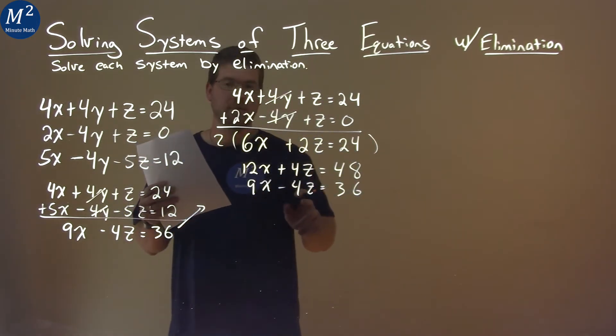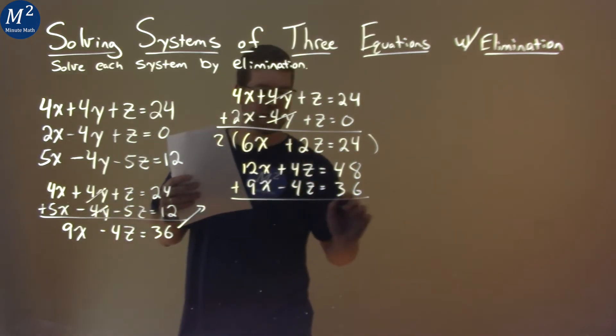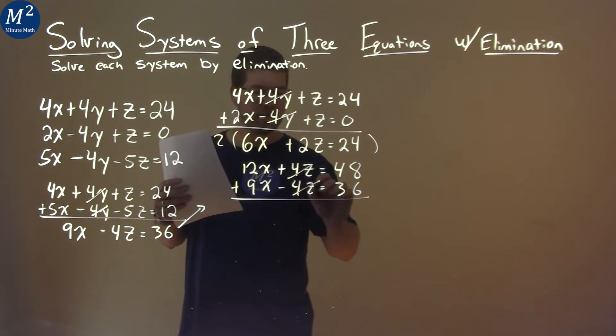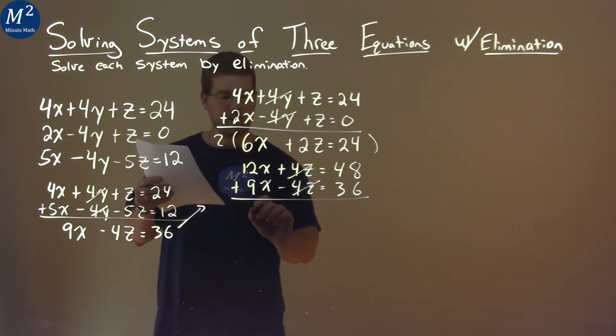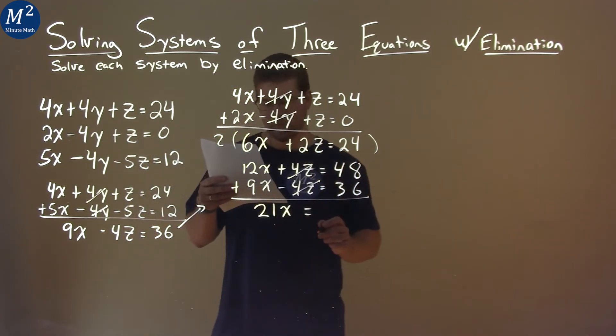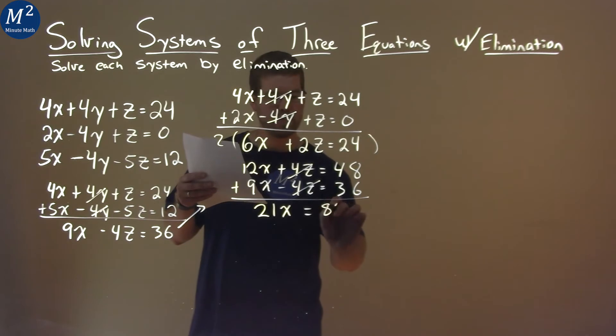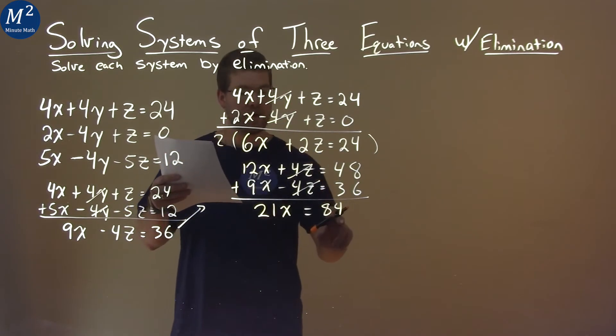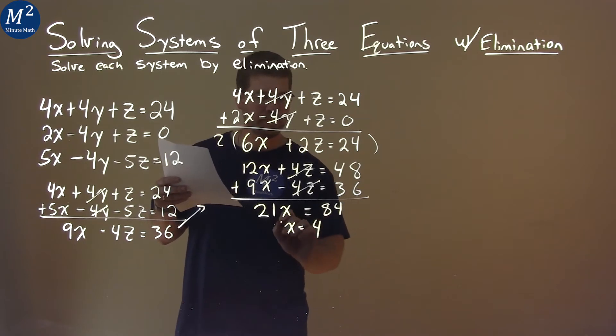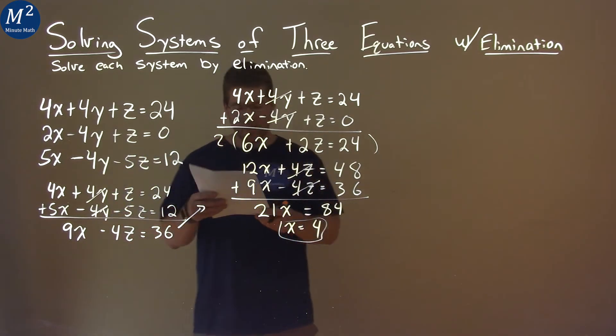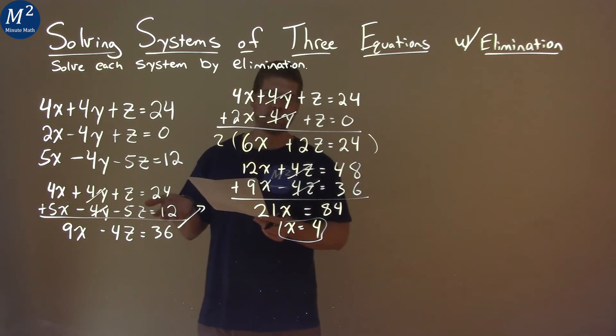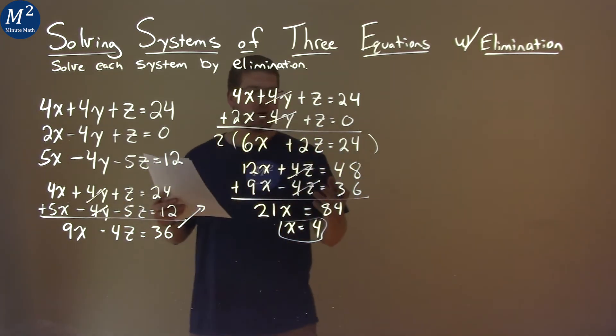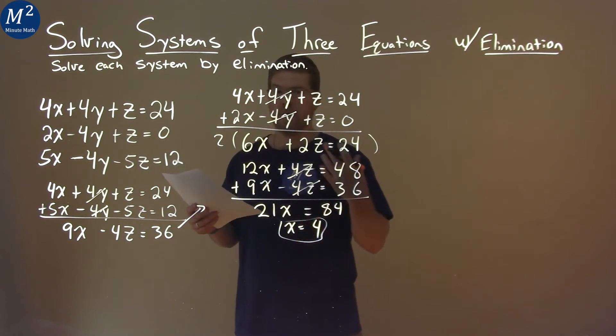I then can bring this equation over underneath it, 9x minus 4z equals 36. So this equation here is the same as this one, just adapted a little, multiplied everything by 2, which is legal in mathematics. That allows us now to eliminate the z. We add together, the z's cancel, and we're left with 12x plus 9x is 21x equals 48 plus 36, which is 84.